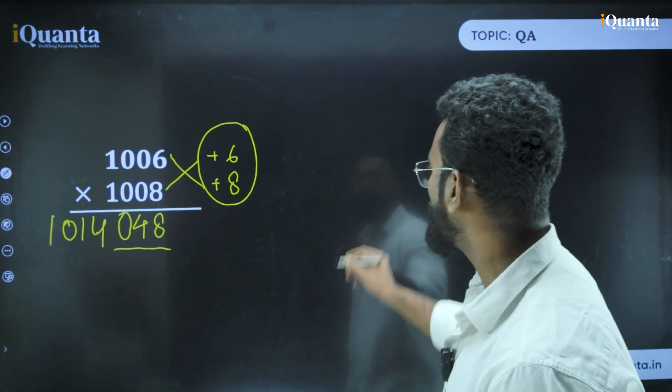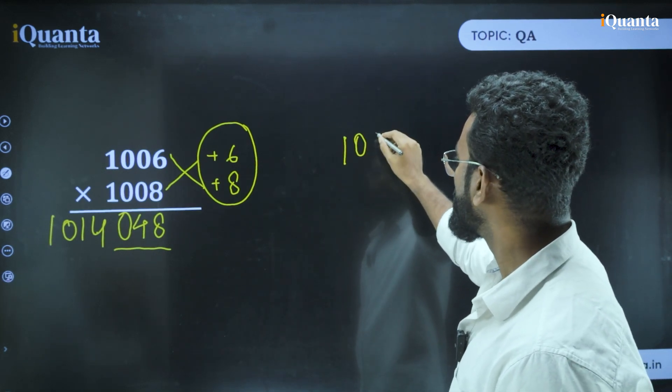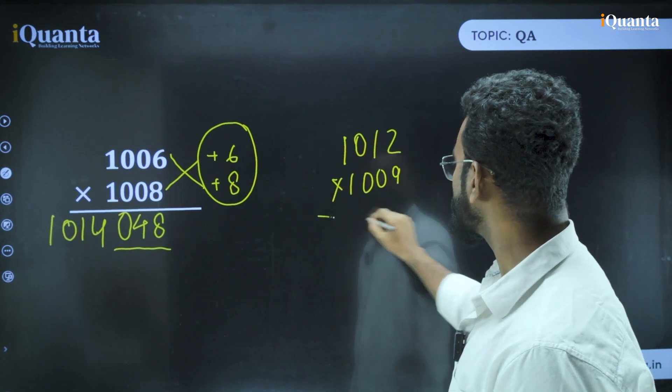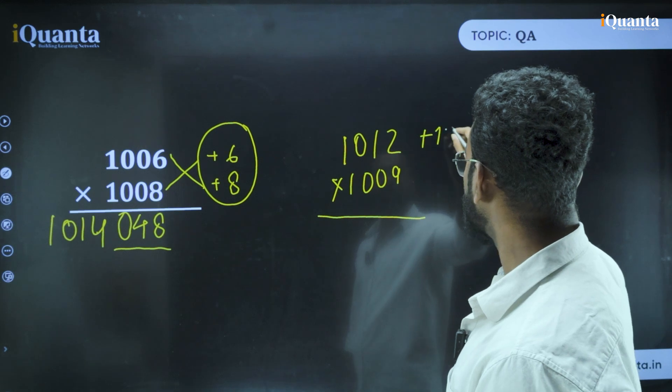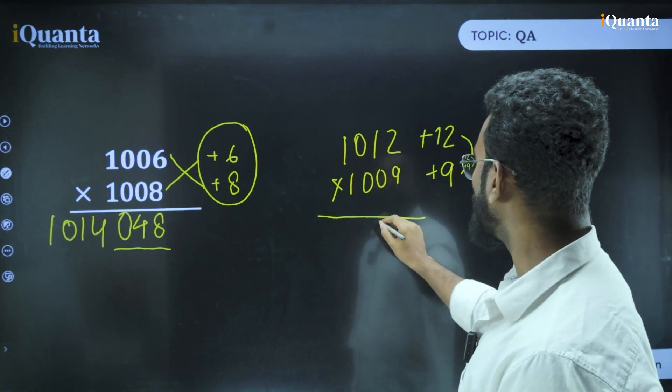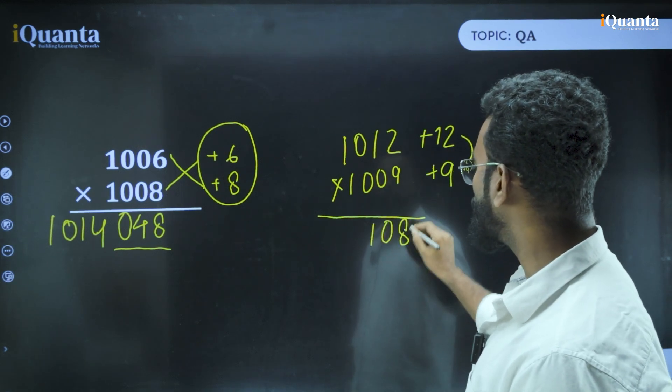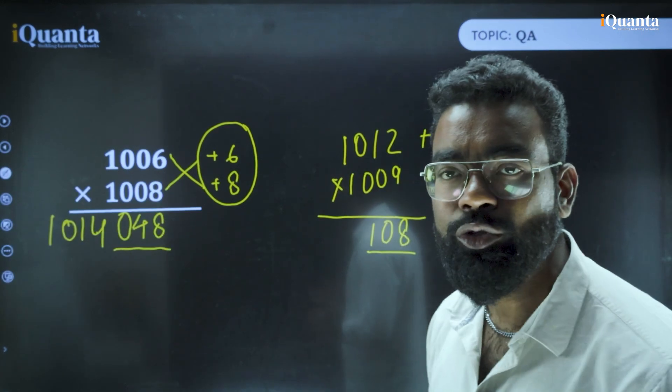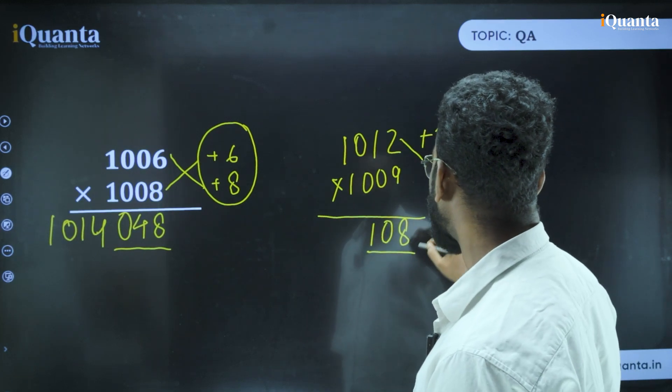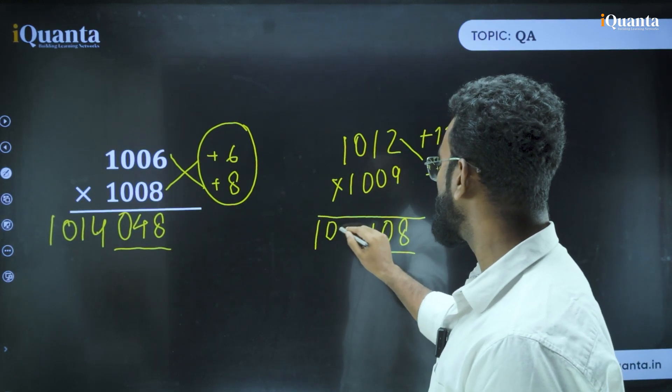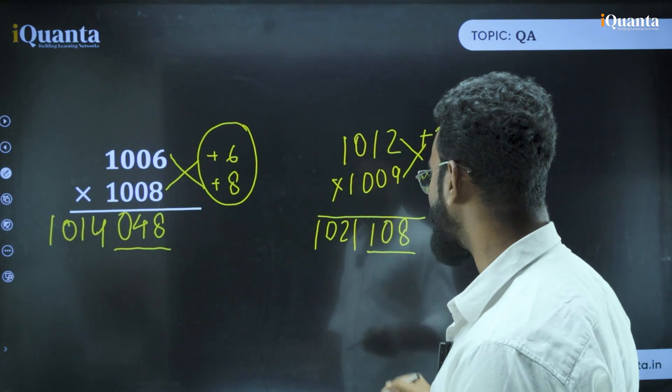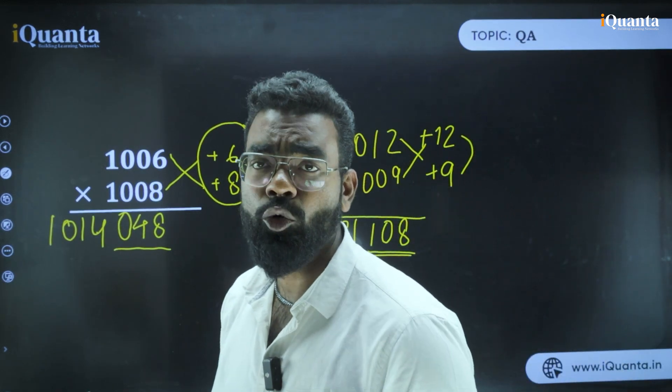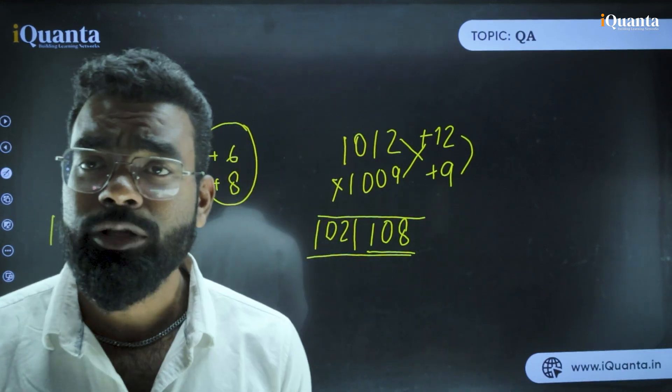I will give you another example. Let's take 1012 into 1009. In this case, this is plus 12 and this is plus 9. What is 12 into 9? That is 108. Now we are not going to do anything else because 12 into 9 is 108 and it is already three digits. So I don't need to use a 0 here. Next step is 1012 plus 9. How much is it? 1021. So your answer is 1021108. This is how we do the calculation which are close to 1000 numbers and they are more than 1000.